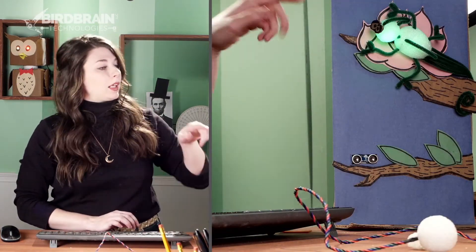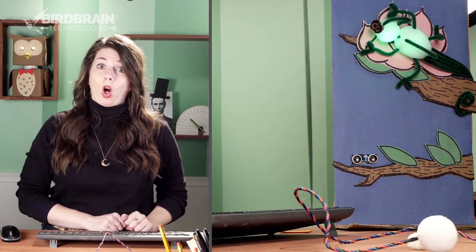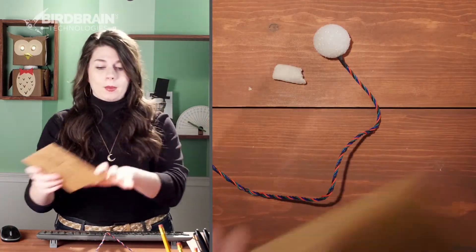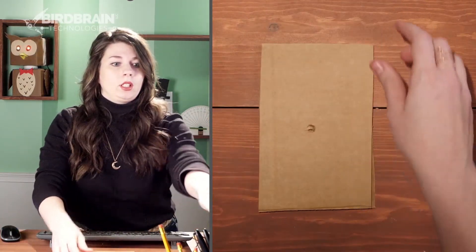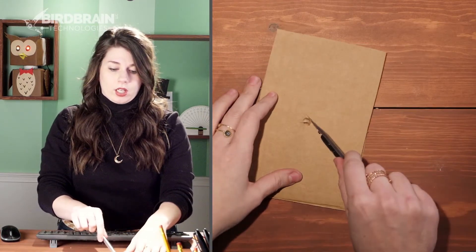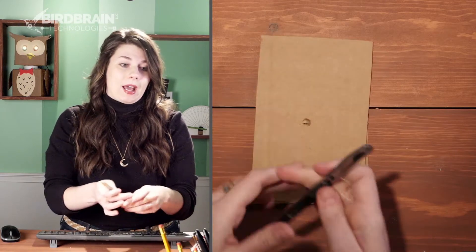You might notice too, that my chameleon is mounted directly to the cardboard wall behind it. How did I do that? Well let me show you. I grabbed a piece of cardboard, I grabbed my cutting tool, like so, and I just cut an X in the cardboard, like that.